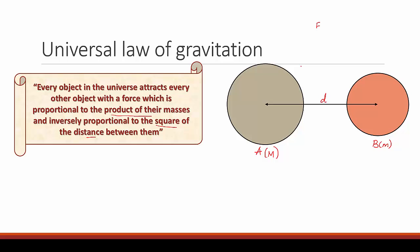According to the universal law of gravity, F is directly proportional to the product of the masses. So the first equation is: F ∝ M × m, where M is the mass of A and m is the mass of B.